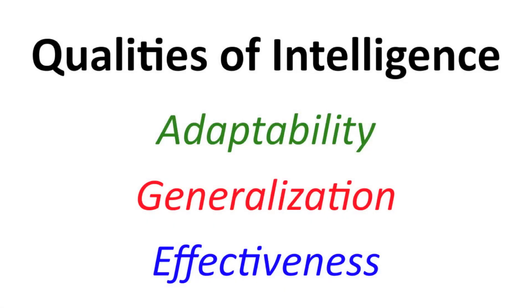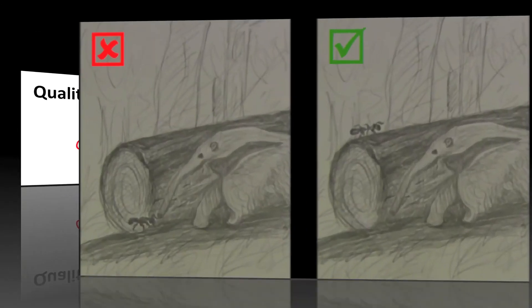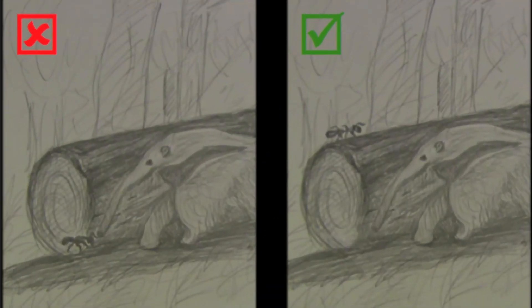Now that we've covered these three key features of intelligence — adaptability, generalization, and effectiveness — in the next video, we'll take a look at how natural selection encourages these qualities in simple nervous systems.